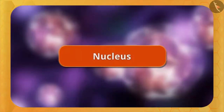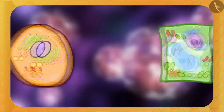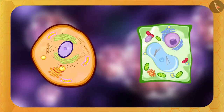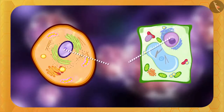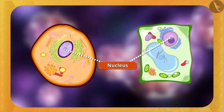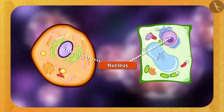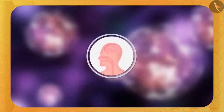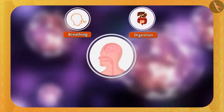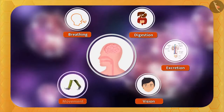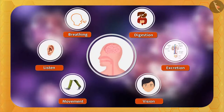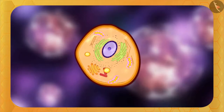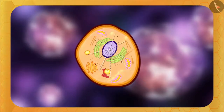Now let us understand about the nucleus. You have already seen that in both plant and animal cells, there is a spherical thing in the center. Yes, it is the nucleus. It is the center of the cell, from which everything will be directed. Just as the brain in our body directs and controls all the processes such as breathing, digestion, excretion, vision, movement, etc., in the same way, the nucleus of the cell also directs and controls all processes.